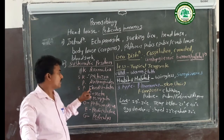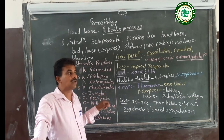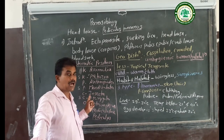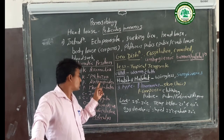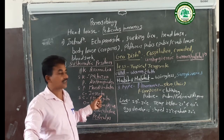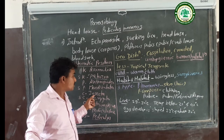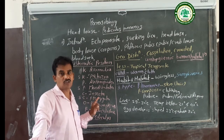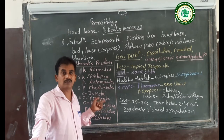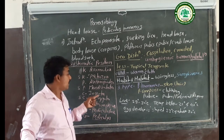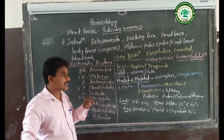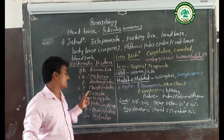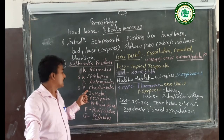Under phylum Arthropoda, the body is divided into three parts: head, thorax, and abdomen. The largest number of animals in the world are included in this phylum. Next is the sub-phylum Mandibulata — meaning the mouth parts are modified mandibles. Class Insecta — also known as Hexapoda — three pairs of legs are present in the thoracic region: the first pair in the prothorax, second in the mesothorax, and third in the metathorax, giving six legs total.